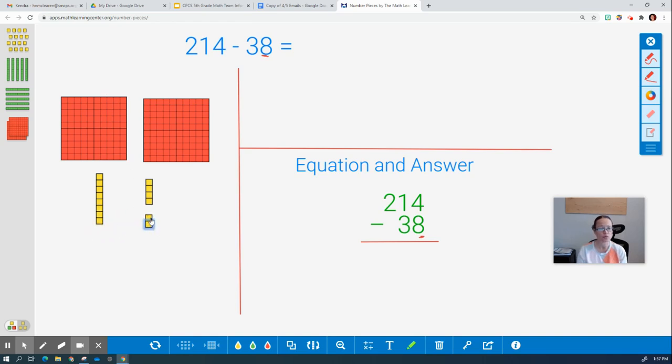So now how many total blocks do I have of the ones? Well, if we count my 10 plus the four I already had, we have 14. So I'm going to mark that on my equation.